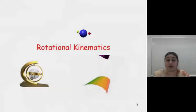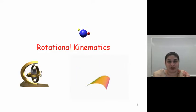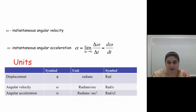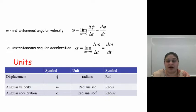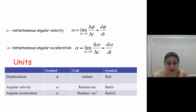Now let's talk about rotational kinematics and derive the equations for rotational equations of motion. As a quick recap, the instantaneous angular velocity is given by dφ/dt, and instantaneous angular acceleration is given by dω/dt. The units for angular displacement are radians, for angular velocity radians per second, and for angular acceleration radians per second squared.